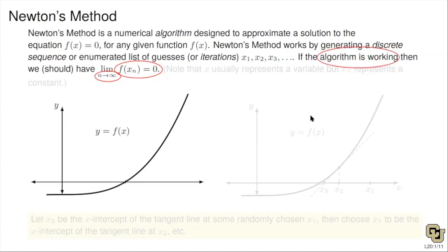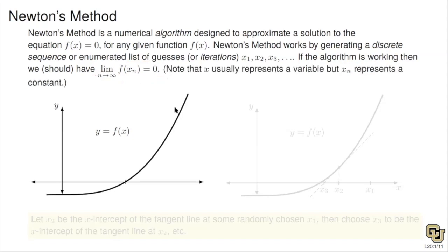Does the algorithm always work? No. On notation: when you see X by itself, that usually represents a variable. But if you see X sub n, that usually represents a constant — a fixed number. Whereas if I just see X, that's a variable that could be any real number.